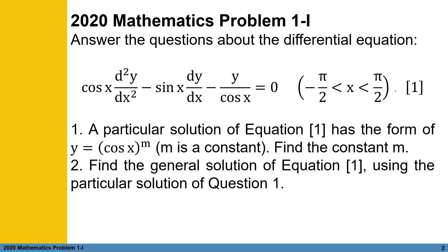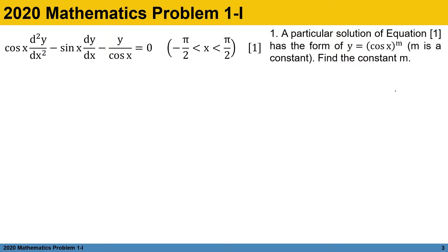The first question: a particular solution of equation 1 has the form y equals cosine of x raised to m, where m is a constant — find the constant m. The second question: find the general solution of equation 1 using the particular solution of question 1. To start solving, we first utilize the provided particular solution y equals cosine of x raised to m, determining its first and second derivatives to substitute into the original differential equation.